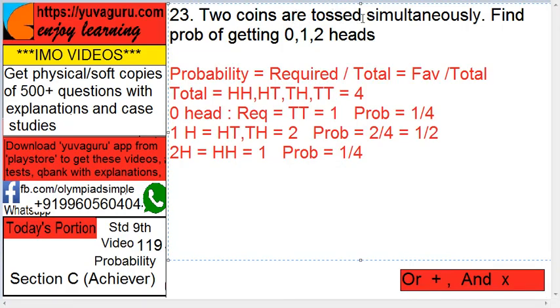Two coins were tossed simultaneously. Find the probability of getting zero, one, and two heads respectively. Now what is probability? Required upon total, or favorable upon total. So what is the total?